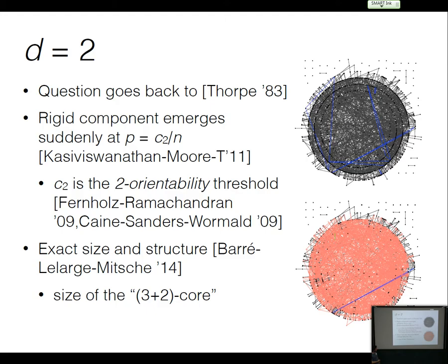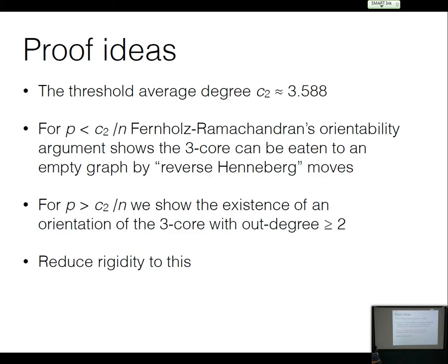So we understand really well how it evolves: at first there's nothing, then eventually a big rigid component comes into G(n,p), and afterwards it grows smoothly until the whole thing gets swallowed up. The guiding intuition is that more or less, their argument is eating back the core of the graph using what are essentially Henneberg moves that preserve rigidity and independence. With high probability you can eat it down to something floppy using reverse Henneberg moves.